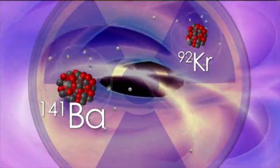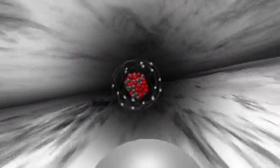These neutrons can then go on to start another reaction with more uranium atoms. Because the reaction starts again by itself, it's called a chain reaction.